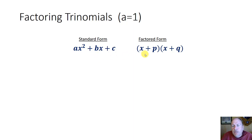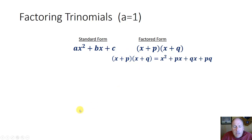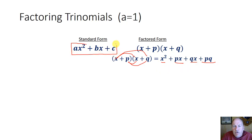This can be factored into a binomial times a binomial in the form x plus p times x plus q. If we were to distribute that x plus p times x plus q out using our distributive property, we'd get x squared plus qx plus px plus p times q, or pq. So if we compared this standard form with what we got when we distribute out the factored form, we would see some similarities.